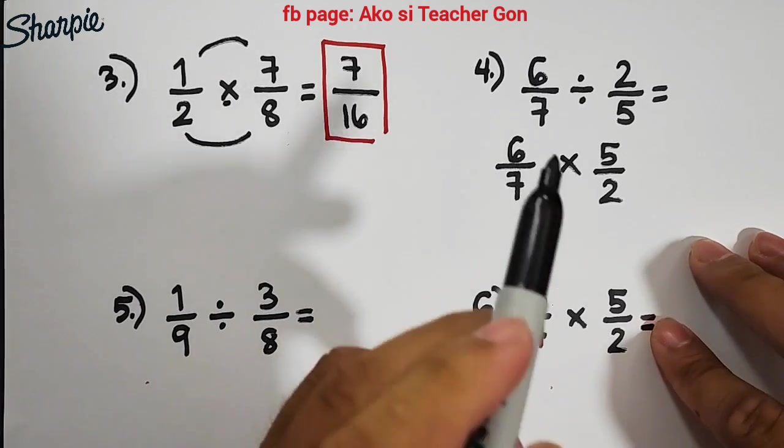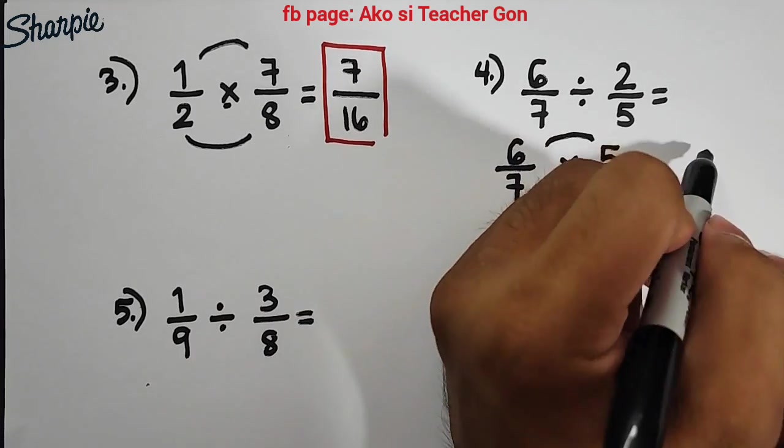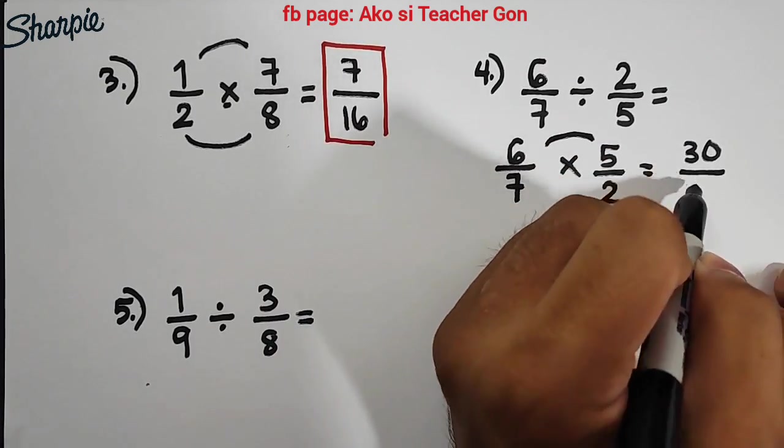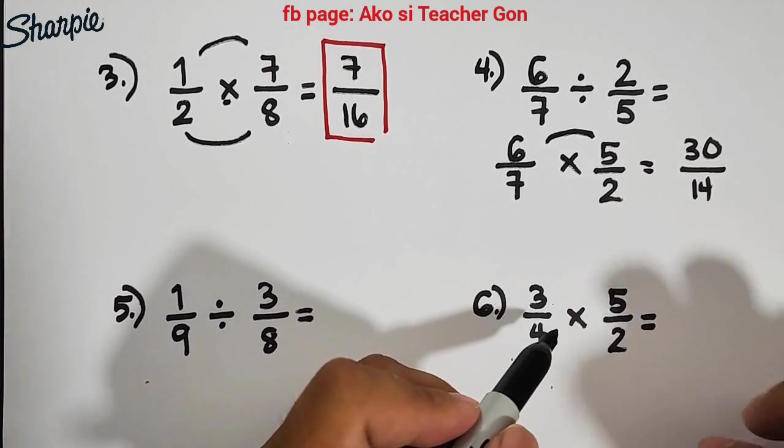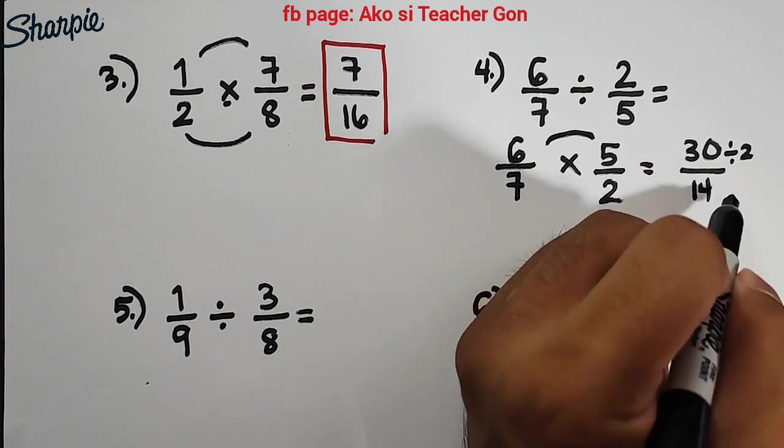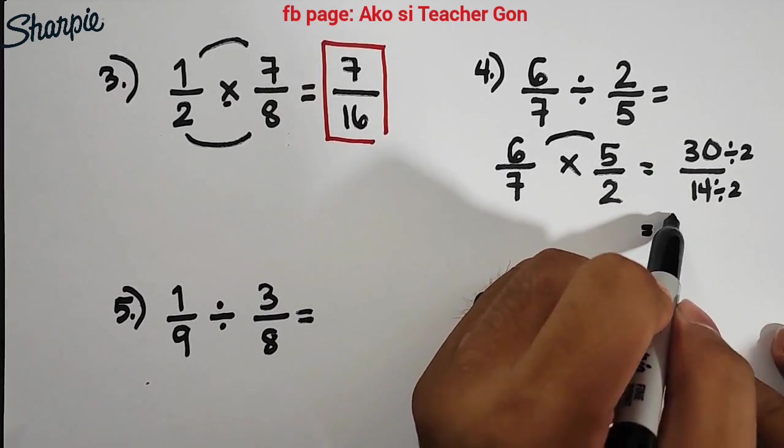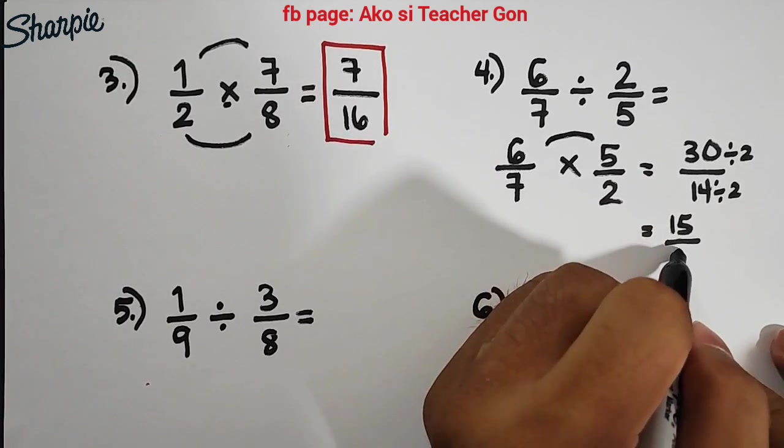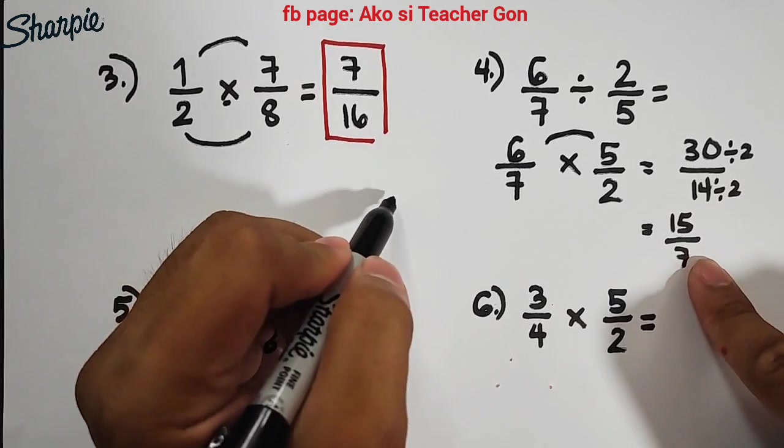When we multiply this, 6 times 5 equals 30, and then 7 times 2 equals 14. As you can see, the two numbers 30 and 14 are both divisible by 2, so we can divide this by 2. 30 divided by 2 is 15 over 14 divided by 2, which equals 7.